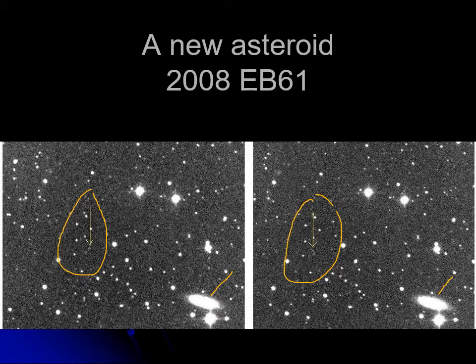From the name, 2008 EB61 tells you it was discovered in 2008. The 'E' tells you what month it is, and B61 means it was probably pretty late in the month because a whole bunch of asteroids were discovered prior to that. But this asteroid was discovered, and you can see that picture right there.